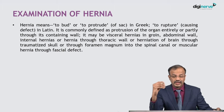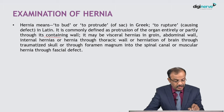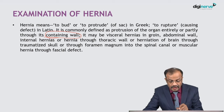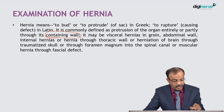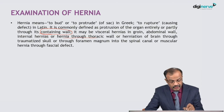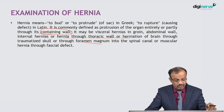So you should have an idea of both the inguinal and the femoral region. Now, the definition of hernia is also important. The word 'hernia' means 'to bud' or 'to protrude' in Greek, and 'to rupture causing a defect' in Latin. It is commonly defined as the protrusion of an organ, entirely or partly, through its containing wall — whether that is the abdominal wall, thoracic wall, skull, or a muscular fascial defect.